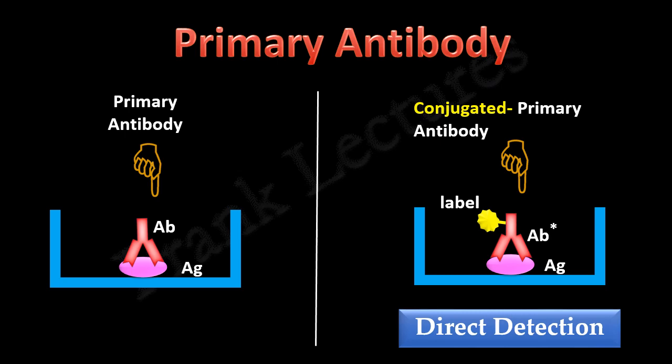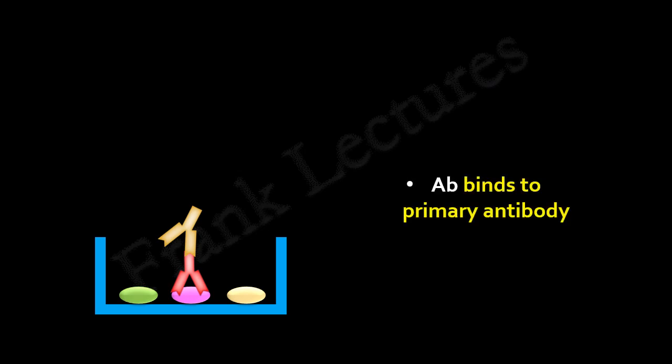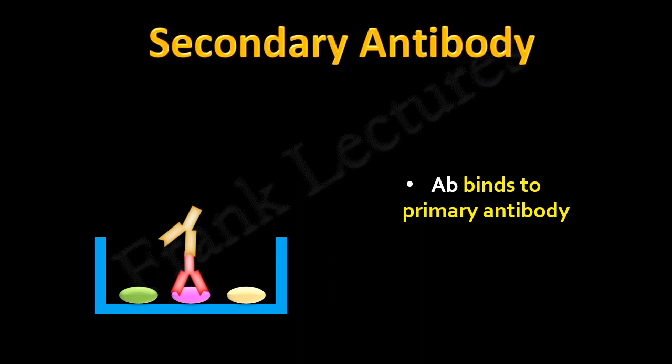Now let's understand what is a secondary antibody. Again, this is our microtiter well with three different antigens. We add an antibody specific to one of these antigens, and specific antigen-antibody binding takes place. We know that this antibody bound directly to the antigen is our primary antibody. Now here comes a second antibody which binds to the primary antibody. This antibody which targets the primary antibody is known as the secondary antibody.